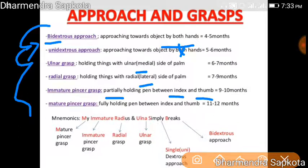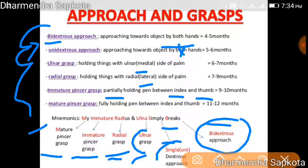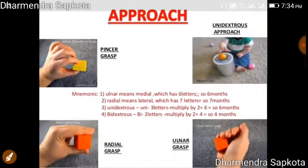The mnemonic to remember the sequence of grasps is: 'My Immature Radius and Ulnar Simply Breaks' — meaning: Bidextrous, then Unidextrous, then Ulnar, then Radial, then Immature pincer, then Mature pincer. Think of a child's bones being vulnerable and able to break. So the order is: bidextrous, unidextrous, ulnar, radial, immature pincer, mature pincer.